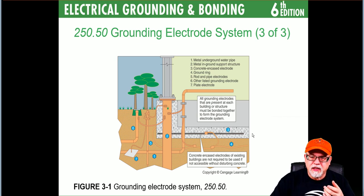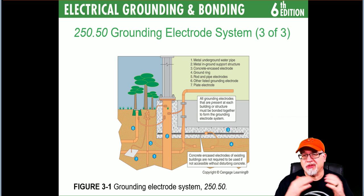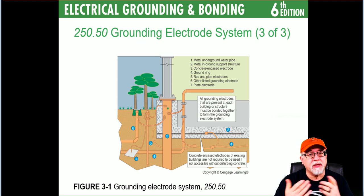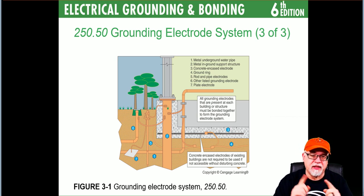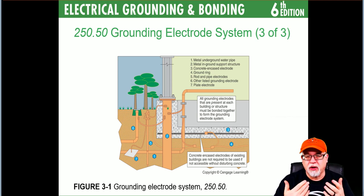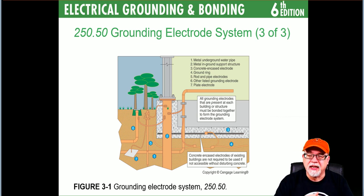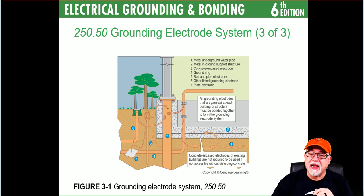Number four is the ground ring, which must go all the way around — it has to encircle the entire building. It doesn't have to be larger than two gauge, though it can be. There are some caveats in the daisy-chain effect that determine whether a larger size is needed, but typically if you have a ground ring it doesn't have to be larger than two gauge.